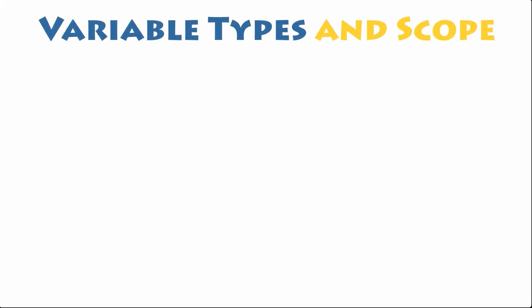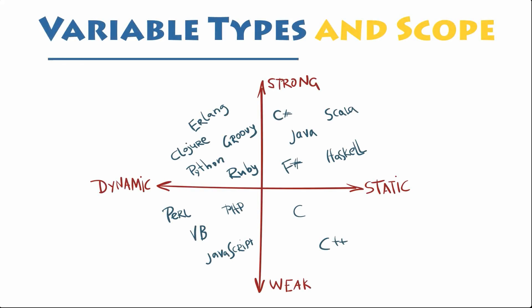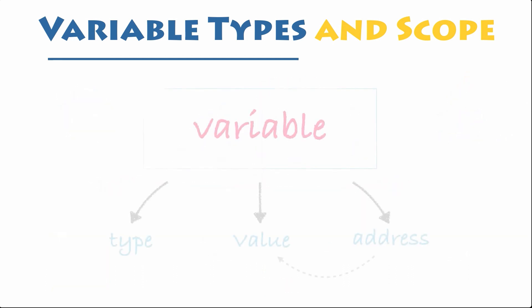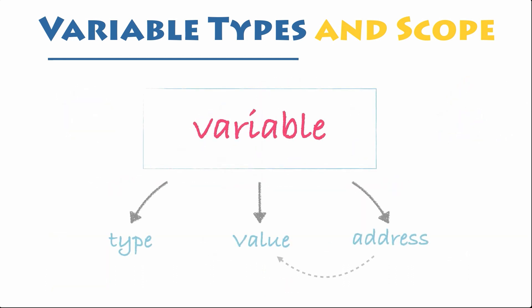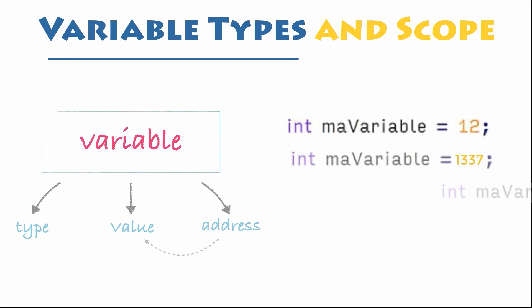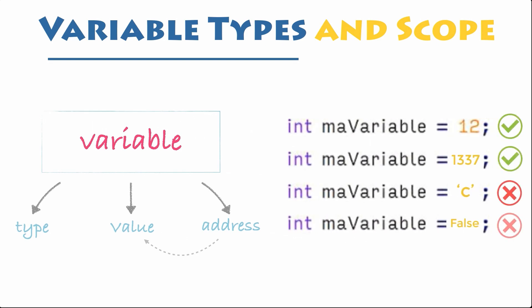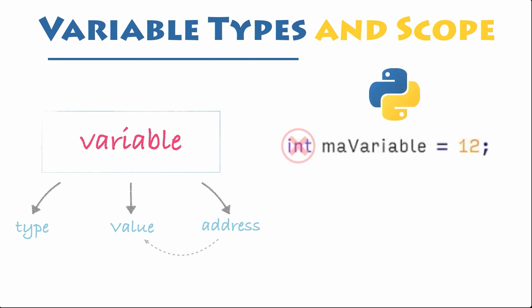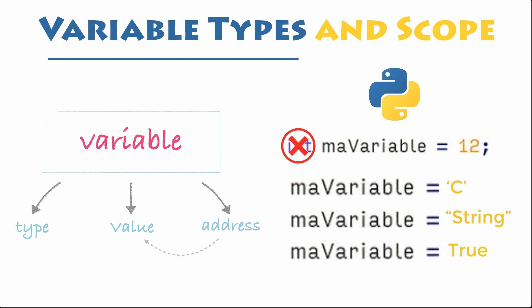Variable types and scope. In many programming languages, variables are statically typed. That means a variable is initially declared to have a specific data type, and any value assigned to it during its lifetime must always have that type. Variables in Python are not subject to this restriction. In Python, a variable may be assigned a value of one type and then later reassigned a value of a different type.